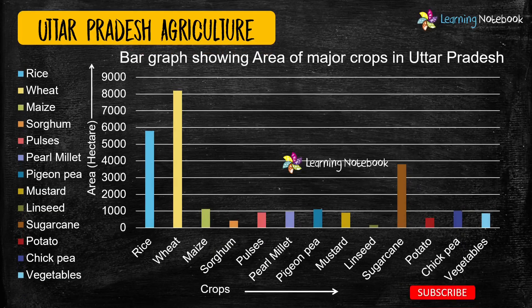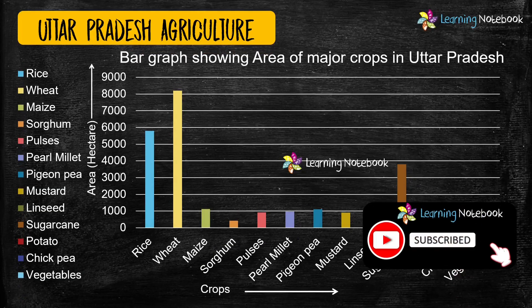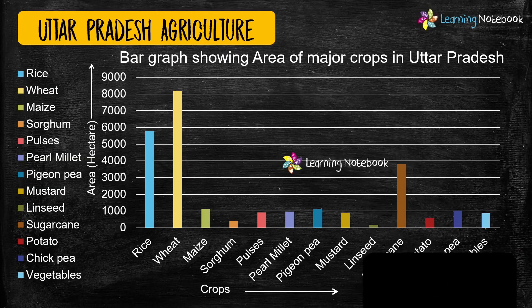Students, you can take help of a bar graph to show the area, yield, or production of major crops in Uttar Pradesh.